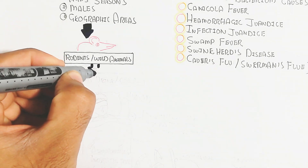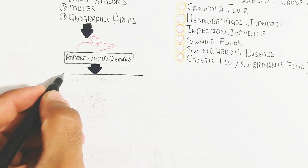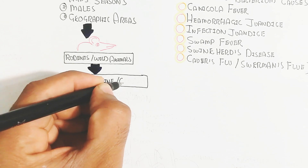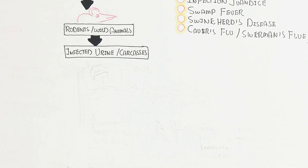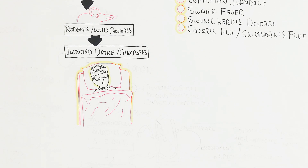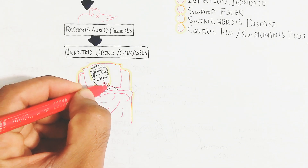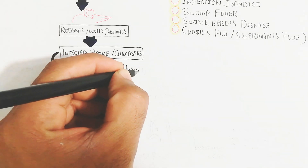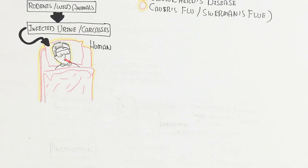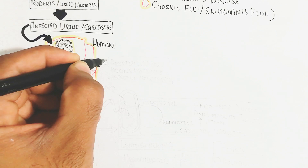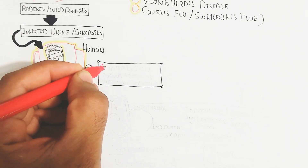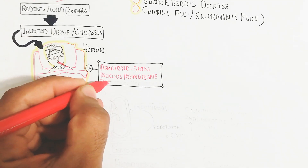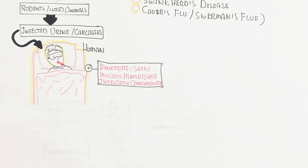This infection transmits through infected urine and carcasses to humans. After infection, the incubation period is important — during this period the infection will not arise but the bacteria will incubate. The bacteria penetrate through skin and mucous membranes; it can also be transmitted person-to-person and through ingestion of contaminated food.